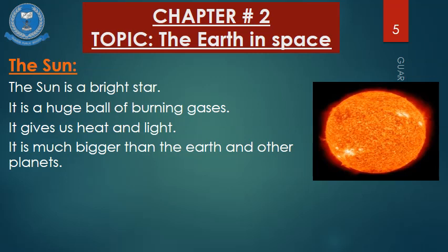Sun ek bright star hai aur yeh ek huge ball hai very hot burning gases ki. Humein sun se heat aur light milti hai. Agar humein sun se heat aur light na mile to hamare planet Earth pe jo life hai woh bahut difficult ho jaye gi. Sun jo hai woh hamare planet Earth se aur baaki other planets se kaafi bada hai.